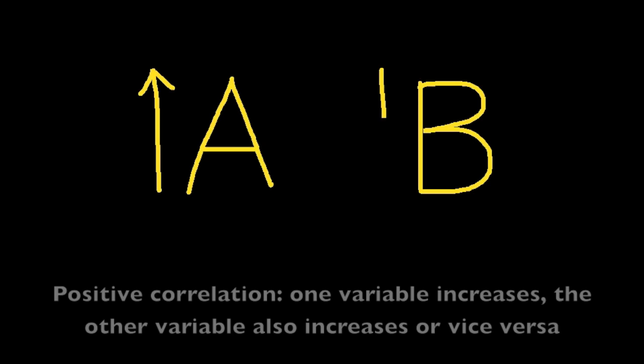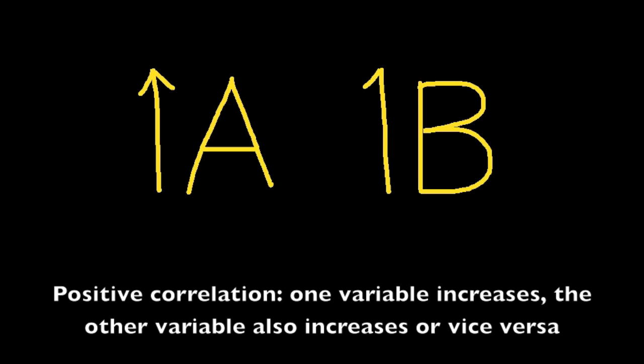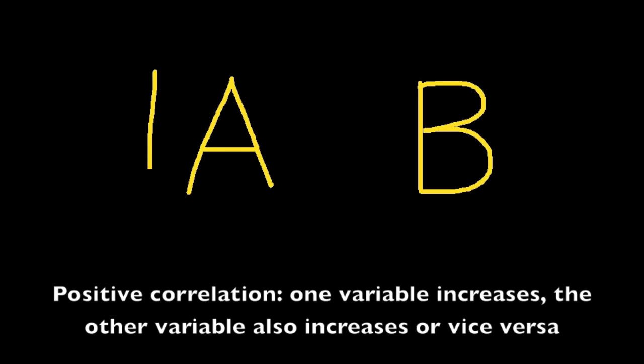A correlation is a relationship between two variables, say A and B. If A increases and B also increases, this is known as a positive correlation. It could also be a positive correlation if A were to decrease and B were to decrease. In other words, if they both do the same thing.